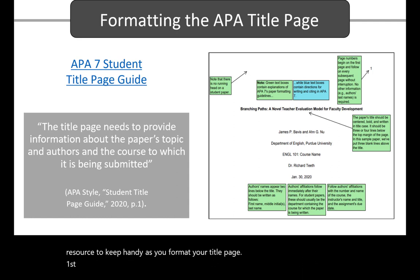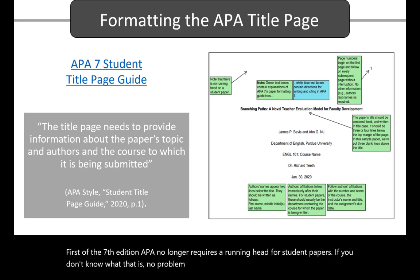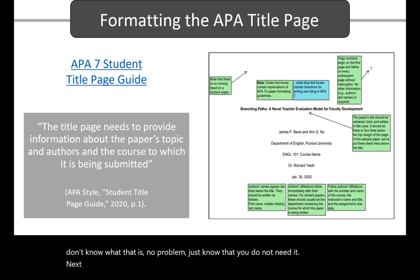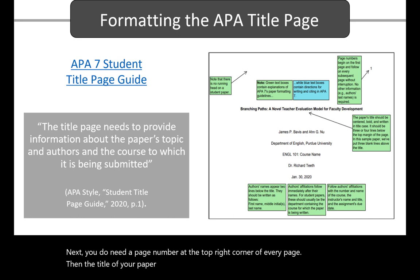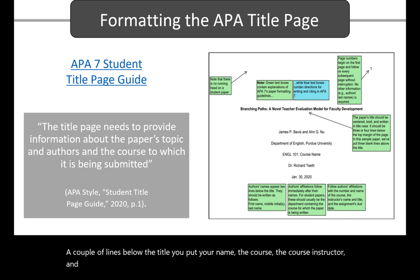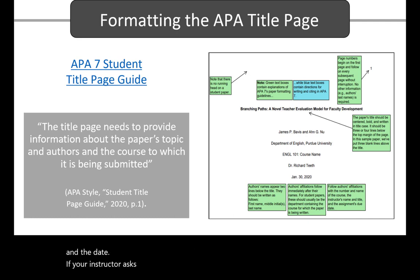First, as of the 7th edition, APA no longer requires a running head for student papers. If you don't know what that is, no problem — just know that you do not need it. Next, you do need a page number at the top right corner of every page. Then, the title of your paper gets centered, put in bold, and is in title case. A couple of lines below the title, you put your name, the course, the course instructor, and the date. If your instructor asks for other information to go here, be sure to follow their directions.